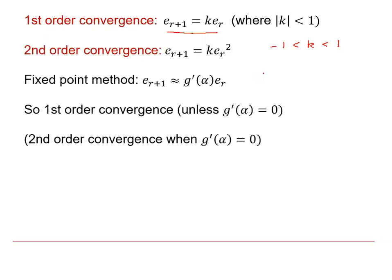And if you recall from when we were using the fixed point method to solve equations, the condition of convergence was that g dash of alpha had to be between minus one and one. And as you can probably guess, it can be shown that g dash of alpha is the same thing as k for the fixed point method.